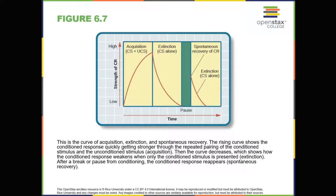Sometimes classical conditioning can lead to habituation. Habituation occurs when we learn not to respond to a stimulus that is presented repeatedly without change — as the stimulus occurs over and over, we learn not to focus our attention on it. For example, if your neighbor or roommate is constantly blaring the television, this background noise is initially distracting, but over time you become accustomed to it and eventually hardly notice it any longer.